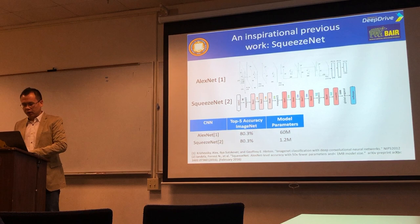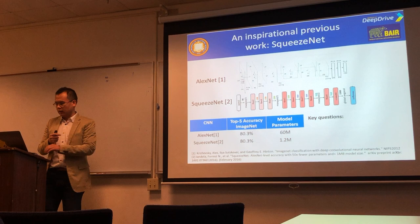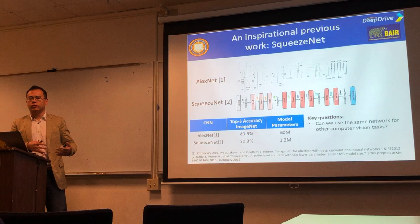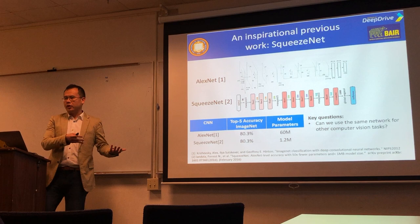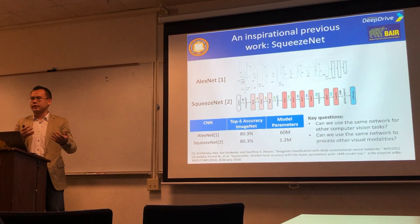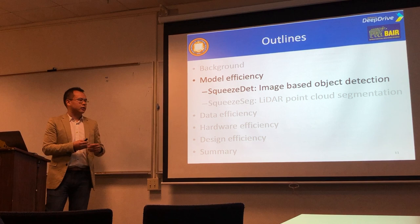But image classification is just one small subset of computer vision problems. The key question is: can we use lightweight neural networks for other computer vision tasks, like object detection? And can we process other visual modalities such as LiDAR, which provides depth information? To answer these two questions, let's look at our work — first SqueezeDet for image-based object detection.